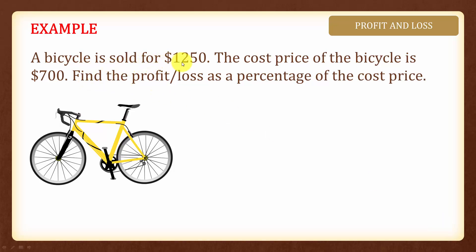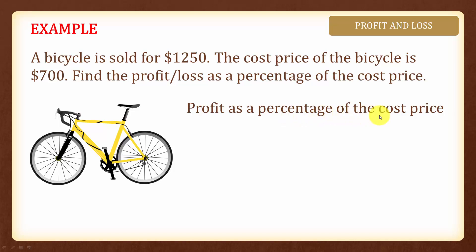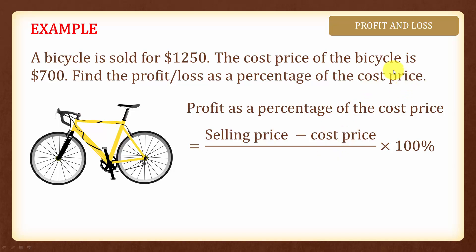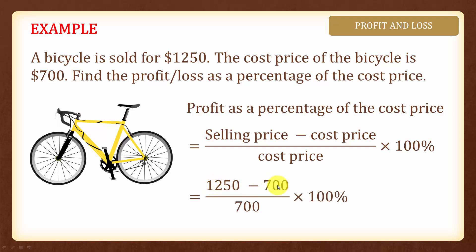In this next example, a bicycle is sold for $1250 and the cost price of the bicycle is $700. We are asked to find the profit or loss as a percentage of the cost price. Since the selling price is higher than the cost price, we will make a profit. Profit as a percentage of the cost price is given by selling price minus cost price, over the cost price. The selling price is $1250 and the cost price is $700. Multiplying by 100%, the profit as a percentage of the cost price is 44%.